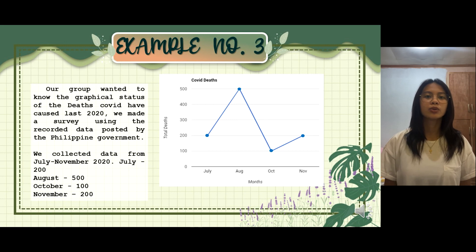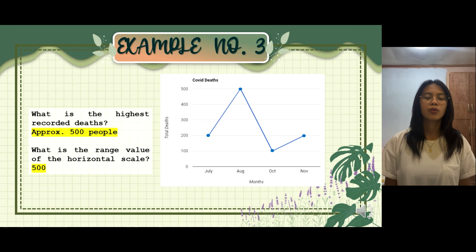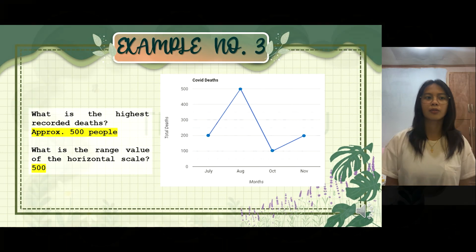For July, we have about 200 deaths. For August, 500 deaths. For October, 100 deaths. And for November, 200 deaths. For the question, what is the highest recorded death? We have about 500 deaths, which is from August. And what is the range value of their horizontal scale? That would be 500. That is all for our example for broken line graph.